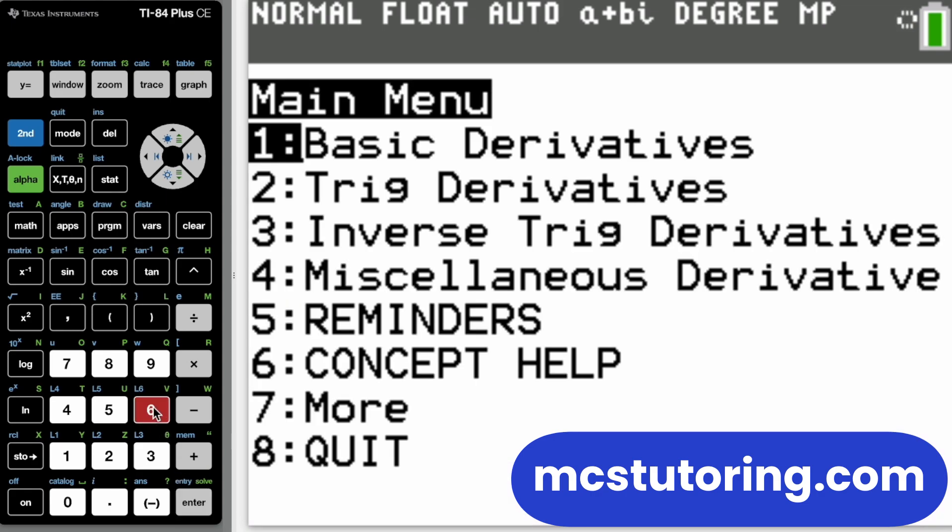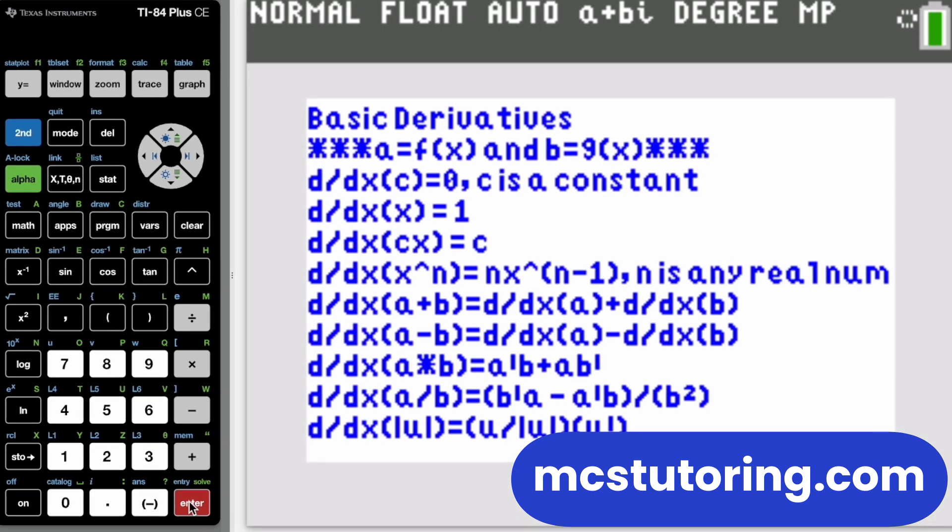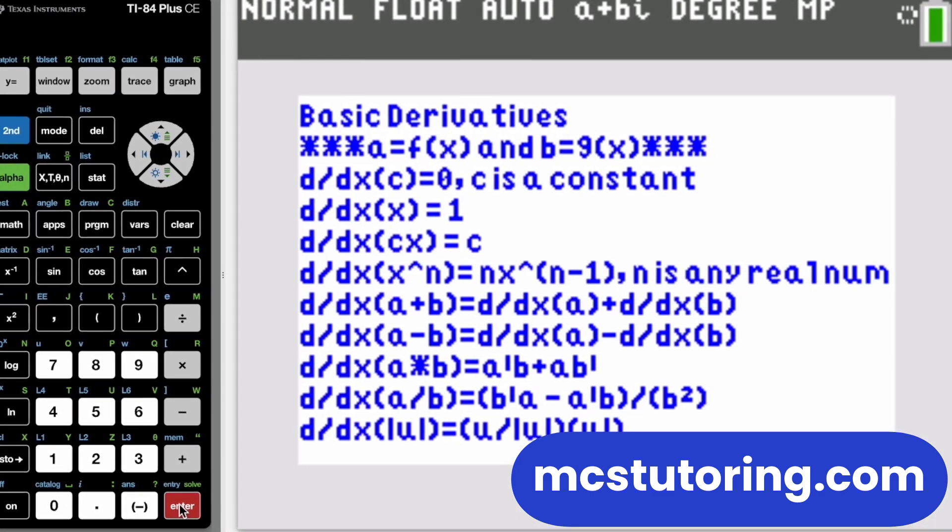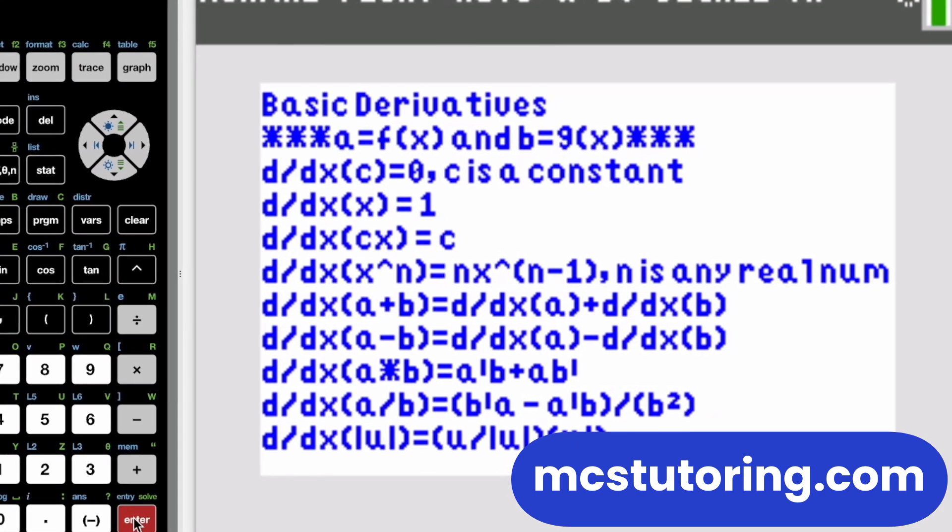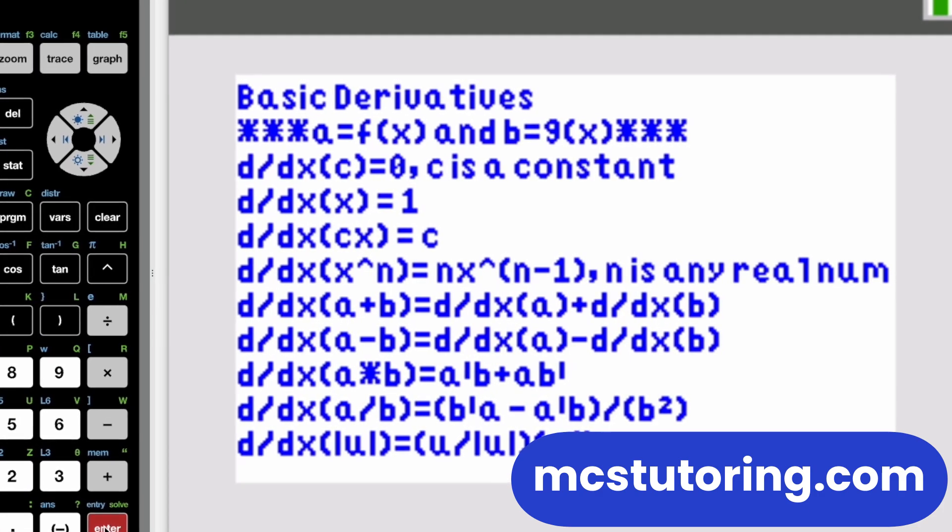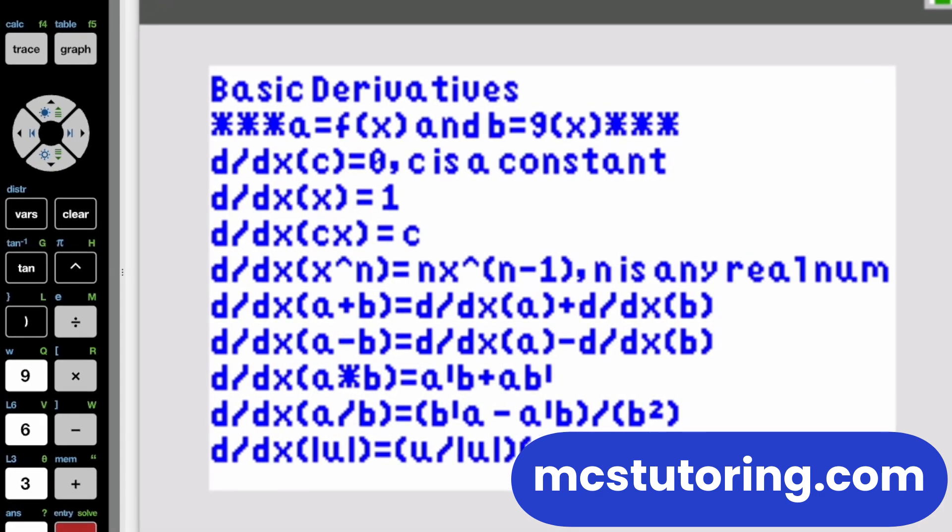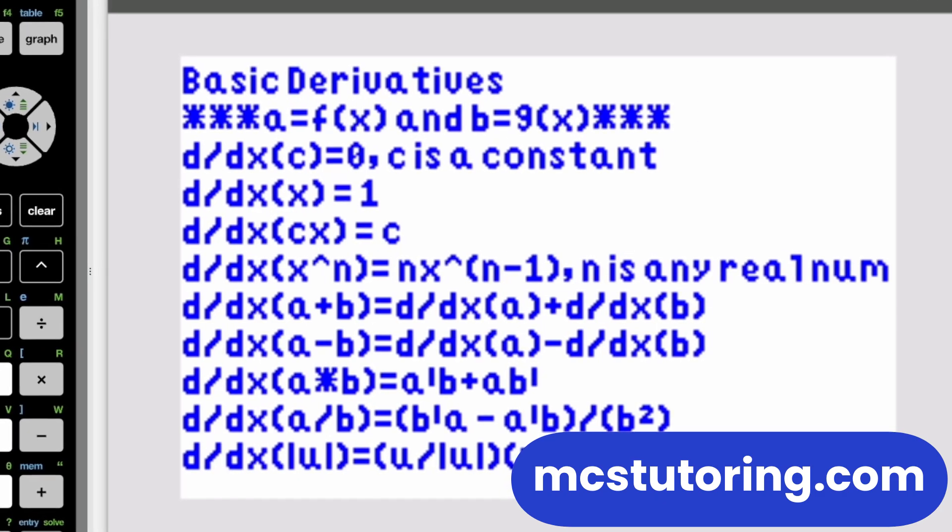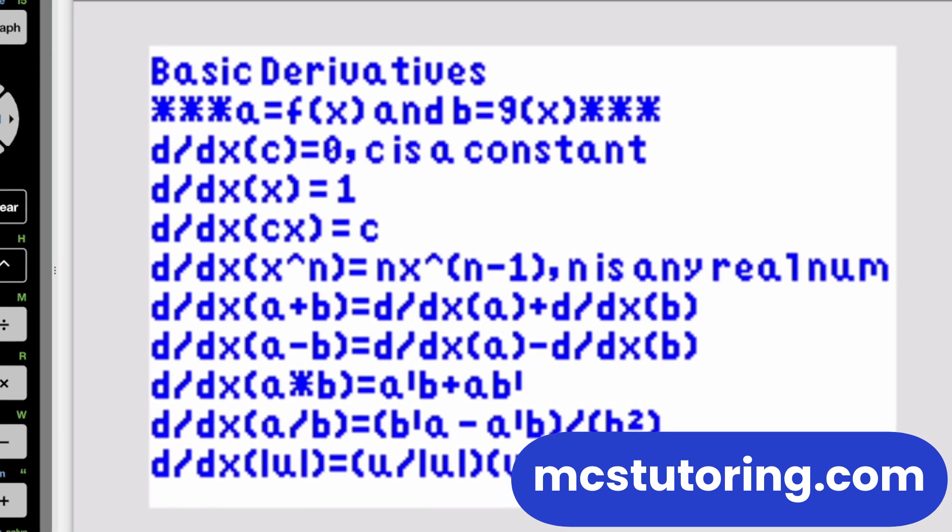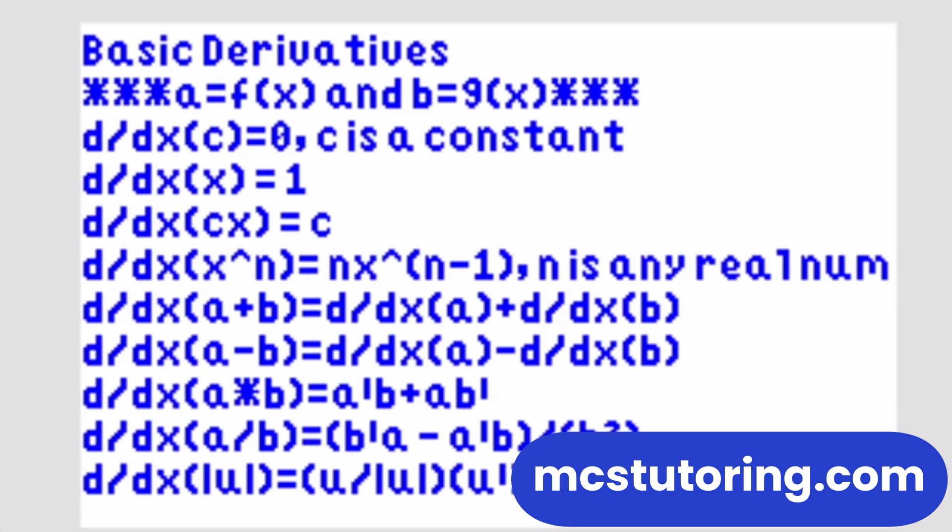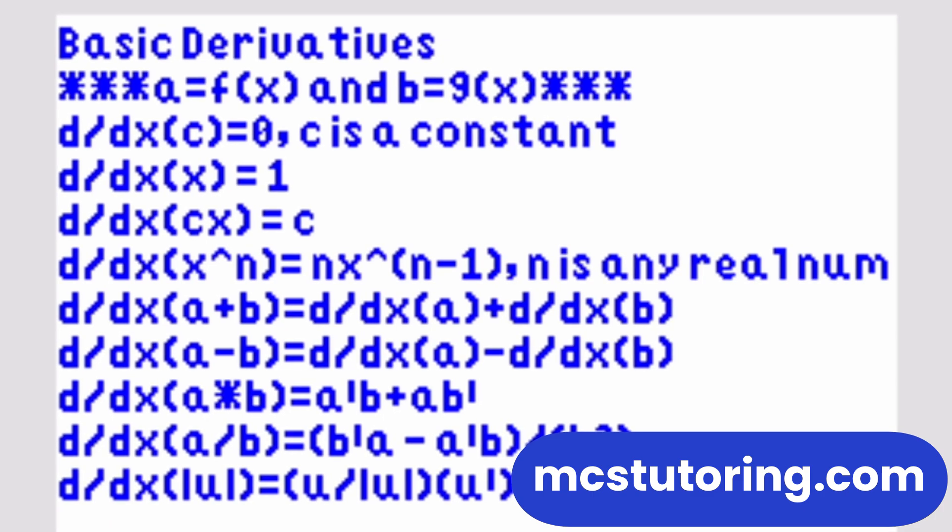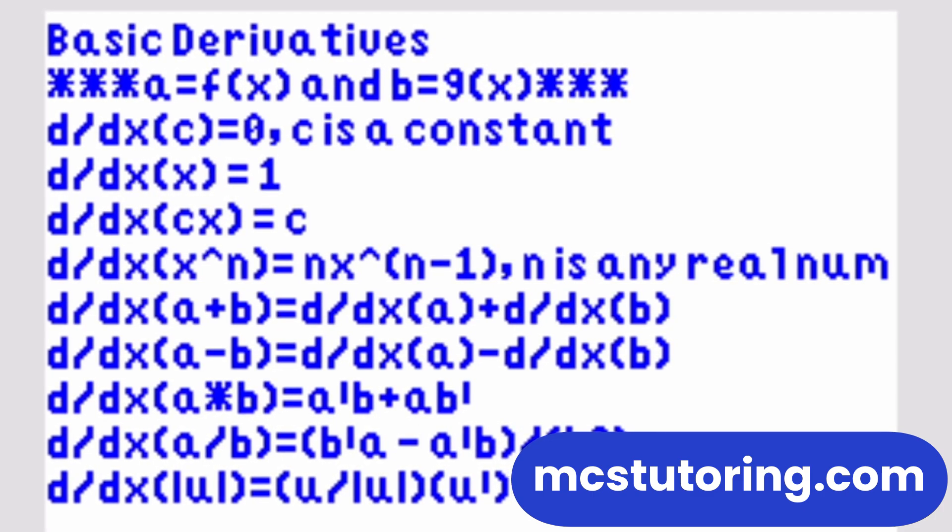Let's start with the derivative section. Here you'll find all the fundamental derivative rules: power rule, sum and difference rules, product and quotient rules. Everything organized in clear, readable text. Instead of stressing about whether you're remembering the quotient rule correctly, you can simply pull it up in seconds. This means you can dedicate your valuable study time to mastering the application of these rules rather than rote memorization.